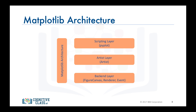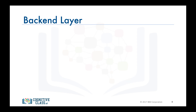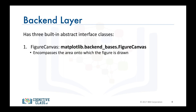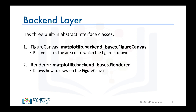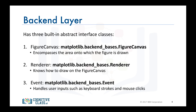The backend layer has three built-in abstract interface classes. FigureCanvas, which defines and encompasses the area on which the figure is drawn. Renderer, an instance of the renderer class that knows how to draw on the figure canvas. And finally Event, which handles user inputs such as keyboard strokes and mouse clicks.